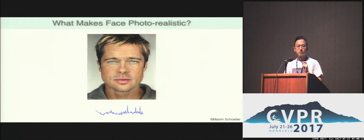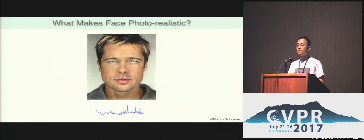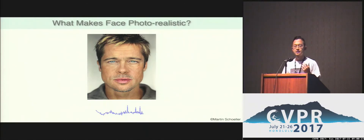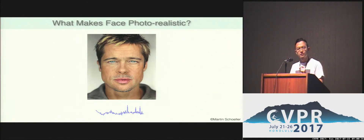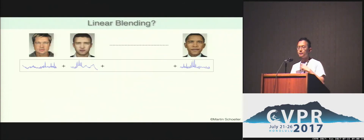We can achieve this using deep neural networks. In the high-res images, you can see a lot of pores, moles, facial hairs, and specularities. These details are key for photorealism, and we found that certain color distributions make up this photorealism. I will show you how we model this and how we synthesize new 3D faces.